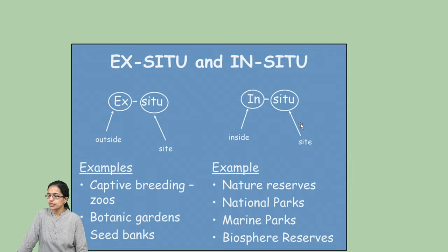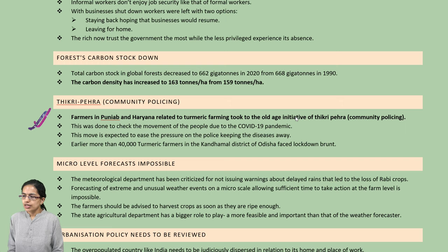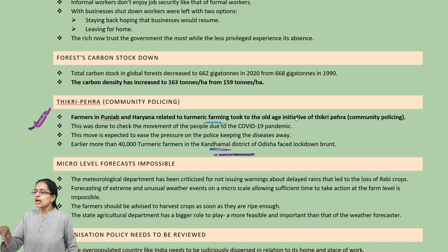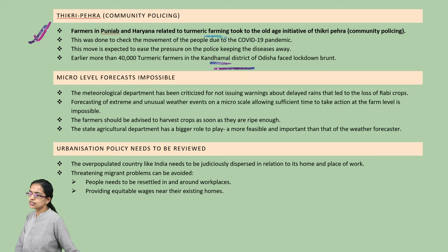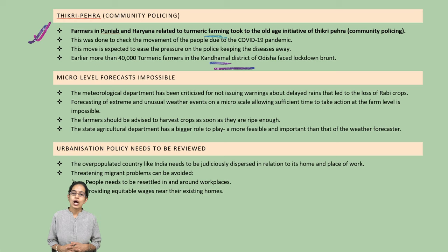We are talking about the community policy known as Thikri Phera. Farmers in Punjab and Haryana have turmeric farming, and similar turmeric farming is also seen in Kandamal district in Odisha, where there is a GI tag for turmeric. We need to review existing urban policies to provide more workplace opportunities to migrants and provide a distress-free environment for people in low and marginalized sections of society, keeping pressure on administrative systems for better policy functioning.